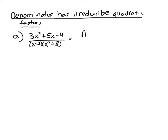To do this, the a over x minus 2 is the same idea as in previous videos. But to deal with the irreducible quadratic, we do plus b — and instead of it just being b over x squared plus 8, which is what it would be if we had a degree 1 term on the bottom, because that factor is degree 2, what we're going to have is bx plus c. That's how you deal with irreducible quadratic factors — you use bx plus c instead of just b.